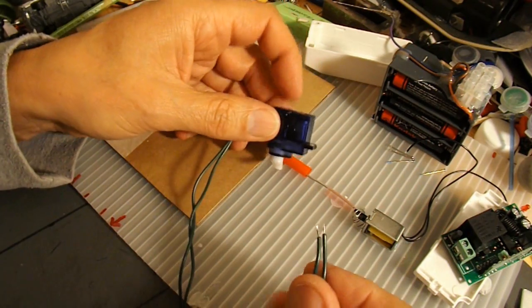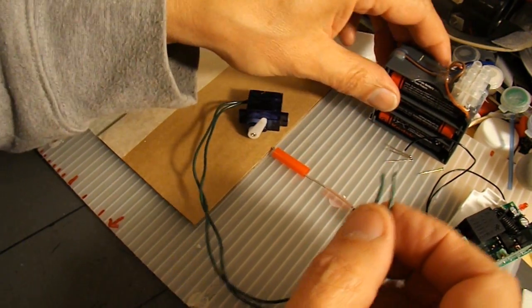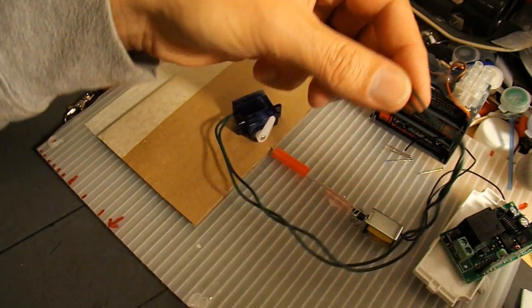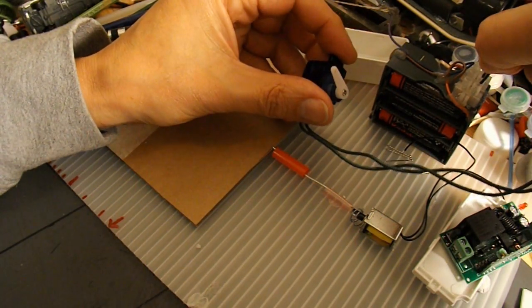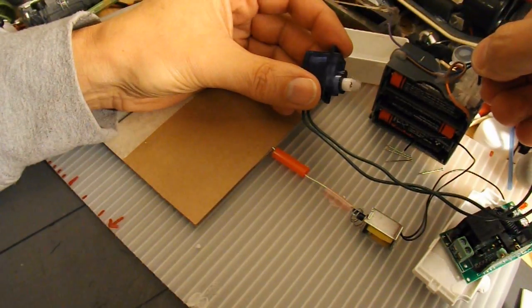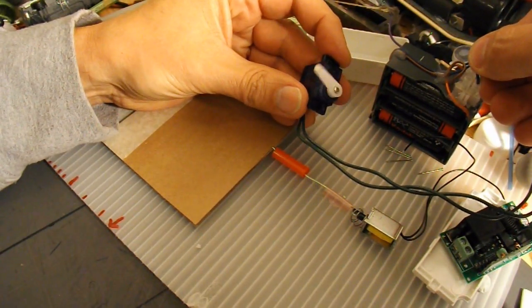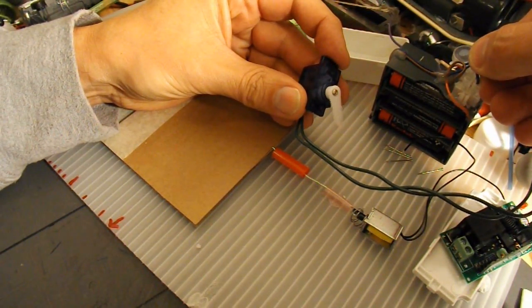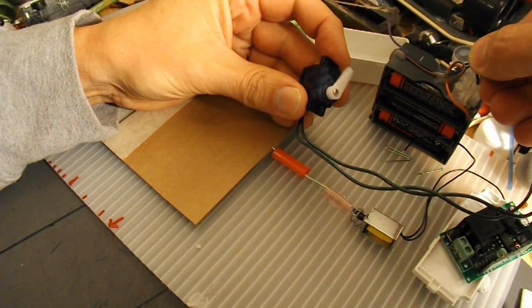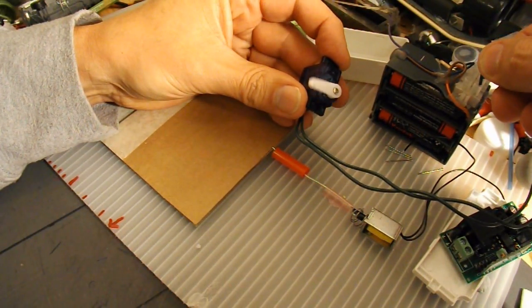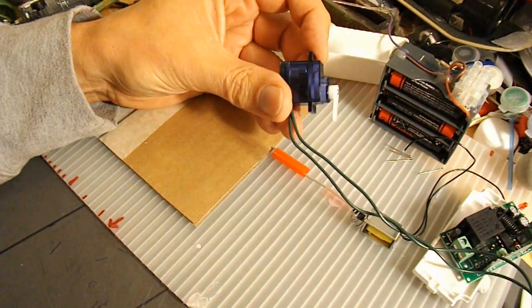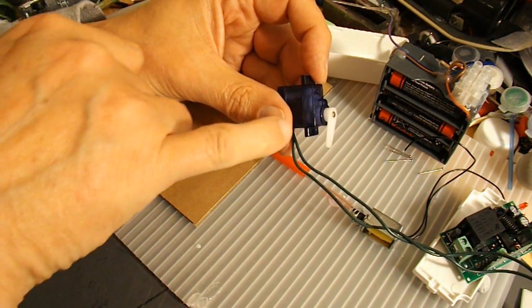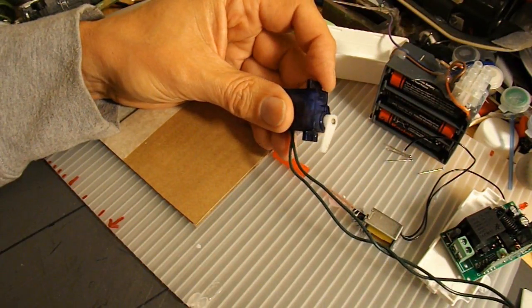Before I actually screw it down, I'll just try it on a battery. There we go. So, continuous rotation. You can use this simple modification to make little robots and that sort of thing if you want.